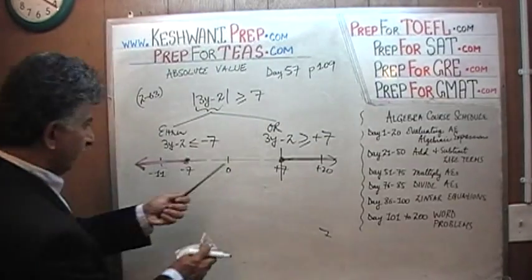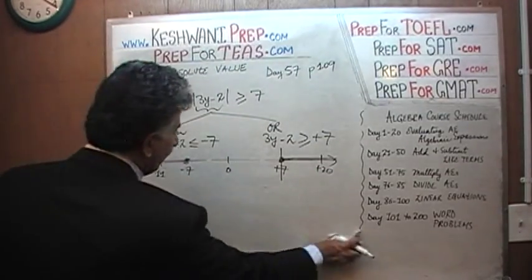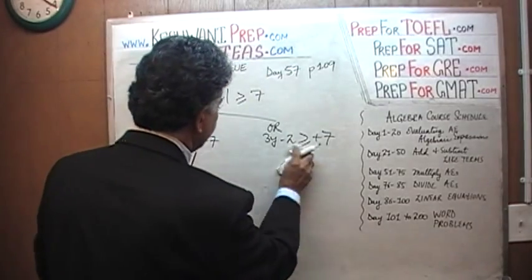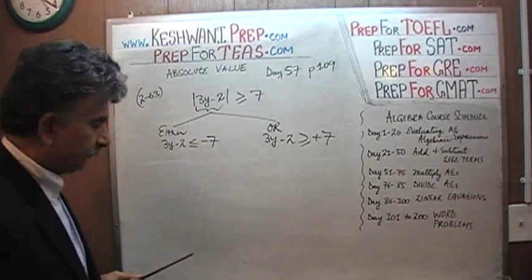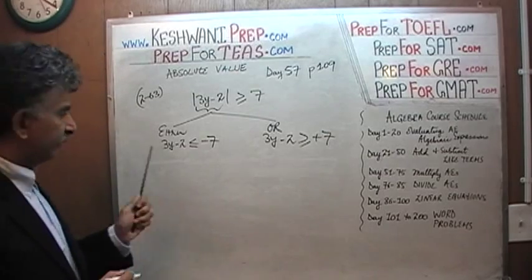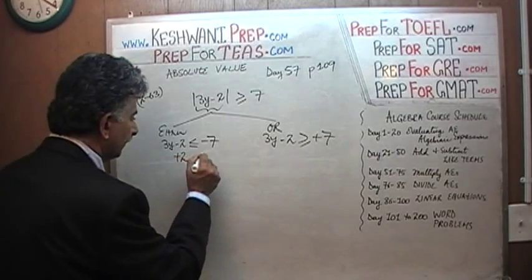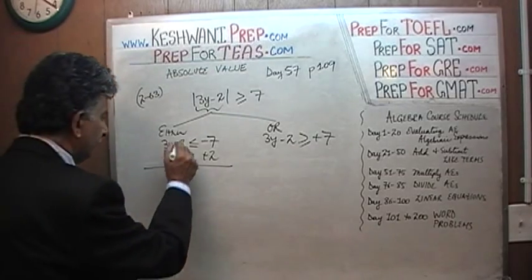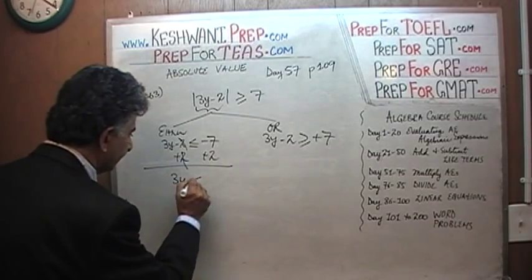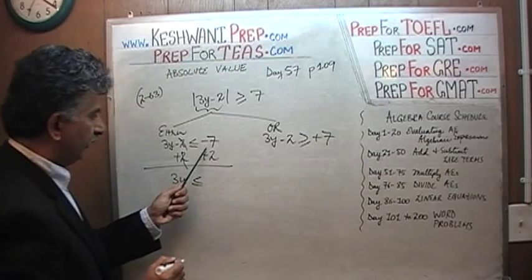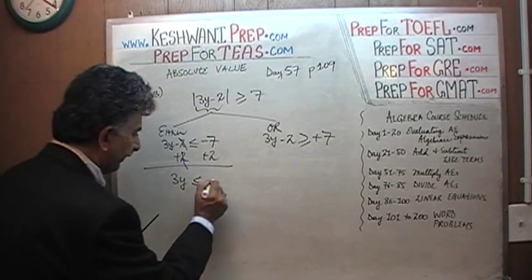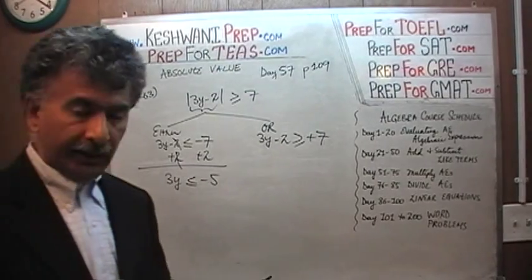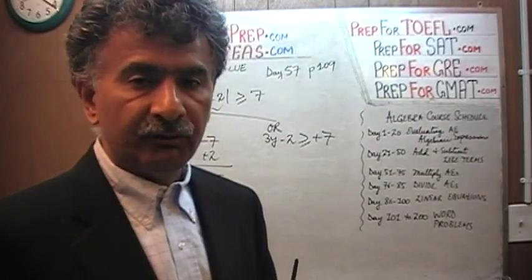Now all we have to do is solve for y. Starting with the first inequality: 3y minus 2 is less than or equal to negative 7. We add 2 to both sides — the 2 cancels out — and we get 3y is less than or equal to negative 7 plus 2, which is negative 5. Solving an inequality is no different than solving an equality.